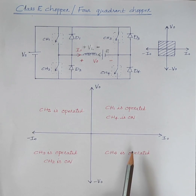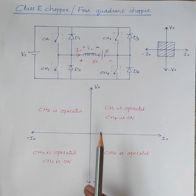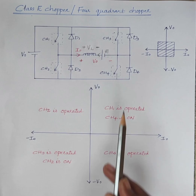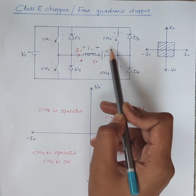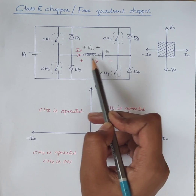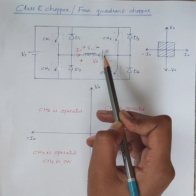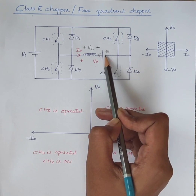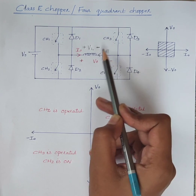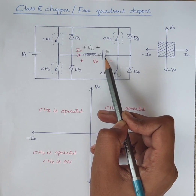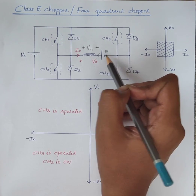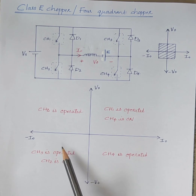Next is third quadrant and fourth quadrant operation. In order to obtain third and fourth quadrant operation of the chopper, we have to reverse the polarity of load EMF E. In first and second quadrant, the polarity of load EMF E is positive here, negative here. In third and fourth quadrant, we reverse the polarity of load EMF E — therefore negative here and positive here.